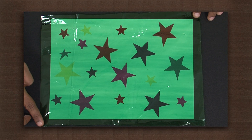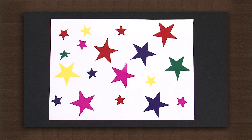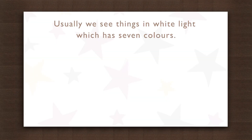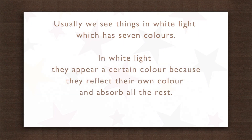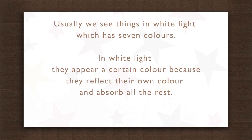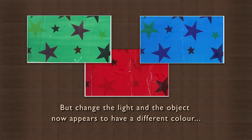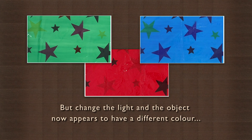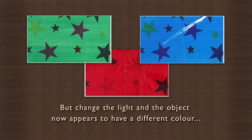These changing colors of the stars are due to the different colored lights that are falling on the stars. Usually we see things in white light which has seven colors. In white light they appear a certain color because they reflect their own color and absorb all the rest. We then say that the object has that color, but change the light and the object now appears to have a different color. So we now know that the color that we see is because the object reflects light of that color.